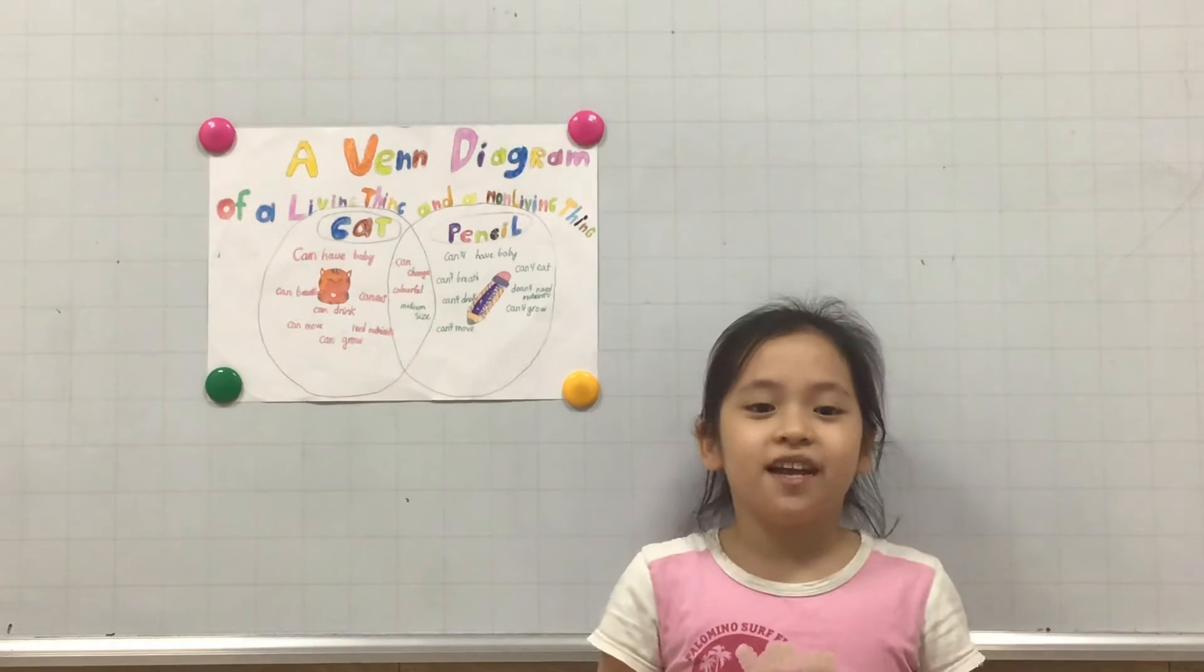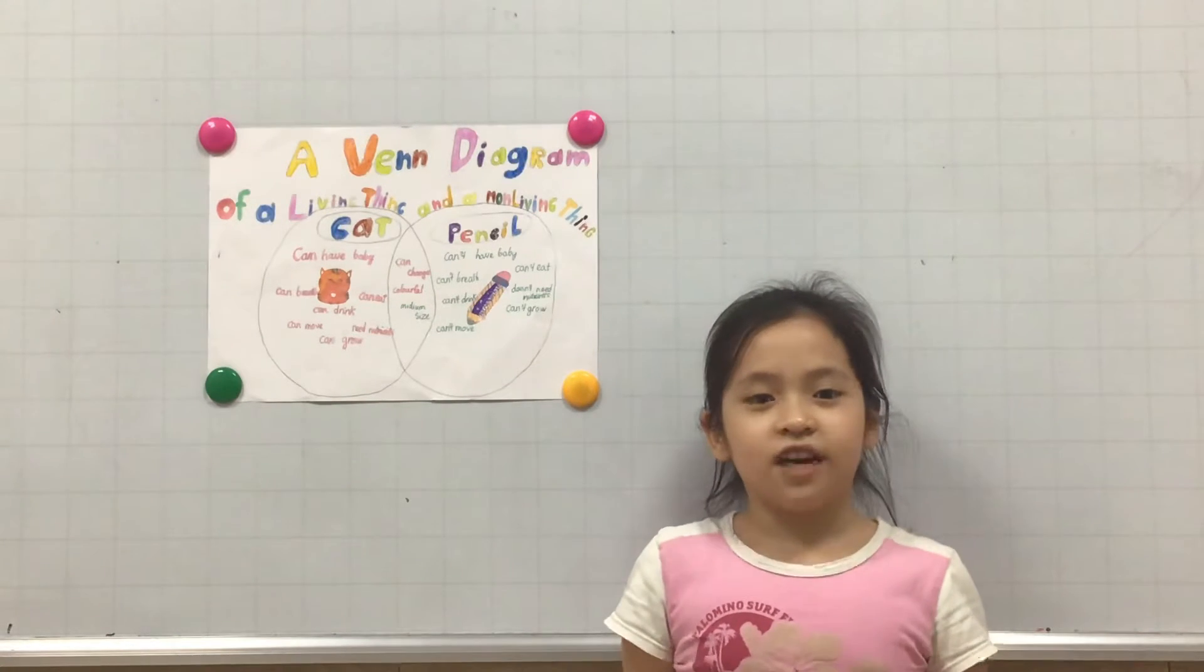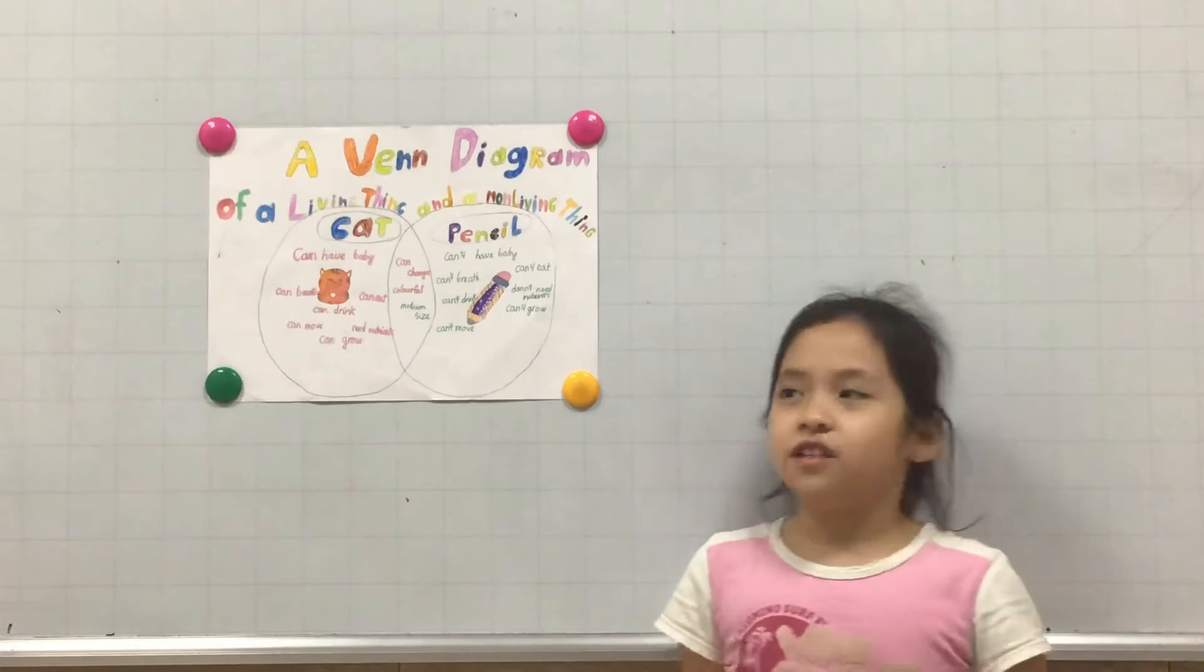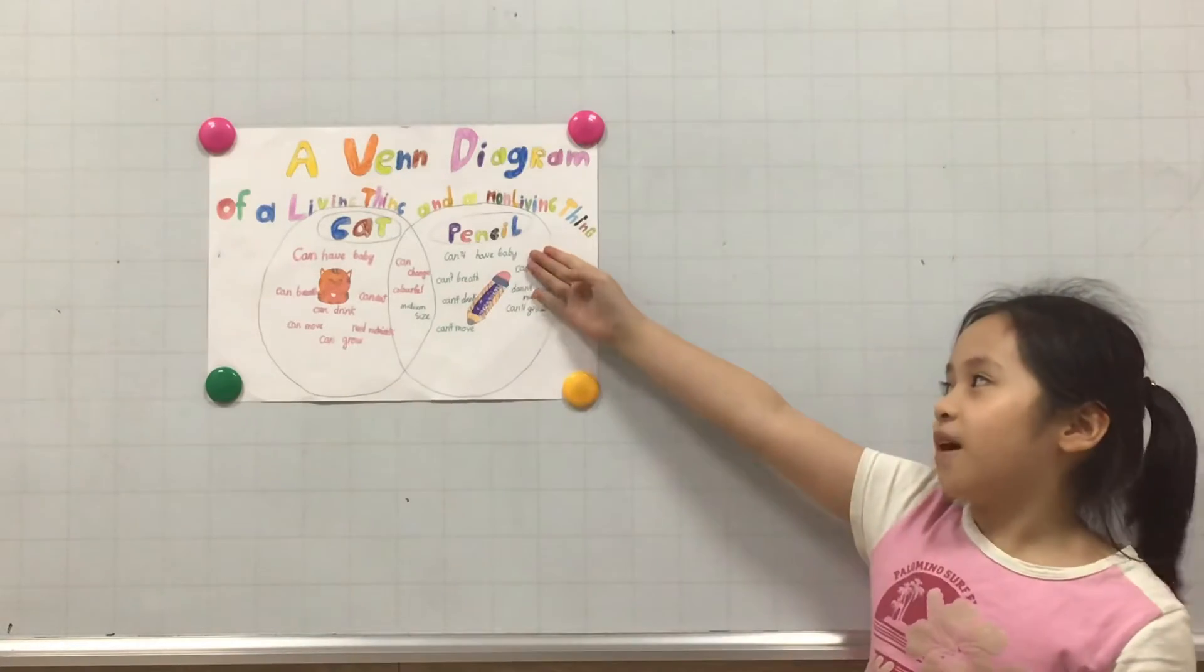Hello everyone, my name is Kim Lund. I'm 9 years old. I'm from Class Discover 1U. Today I will tell you about my Venn Diagram.